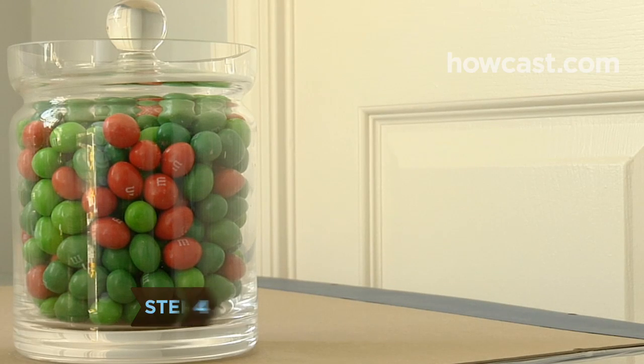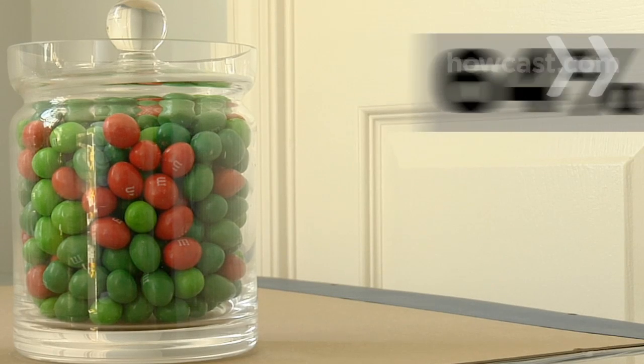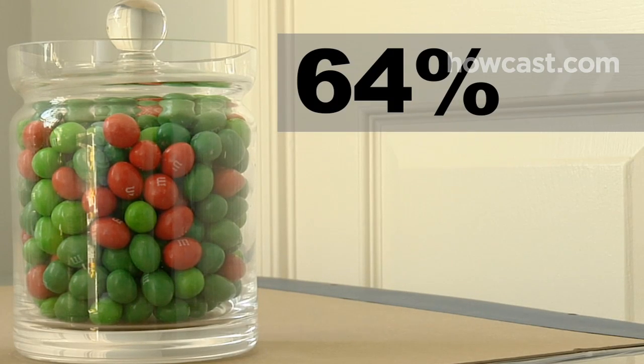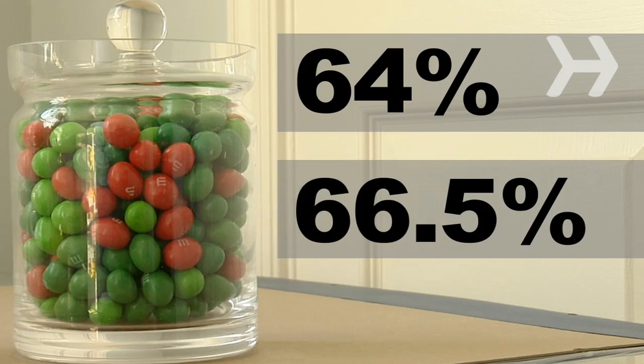Step 4. Calculate the percentage of the total volume the candies take up in the jar. Calculate 64 percent of the jar's total volume if the candies are spheres, and calculate 66.5 percent of its volume if they are oblate spheroids.